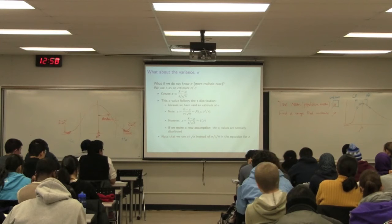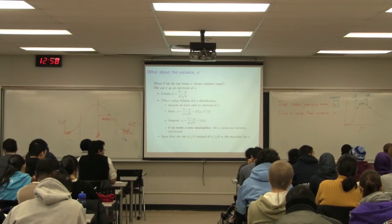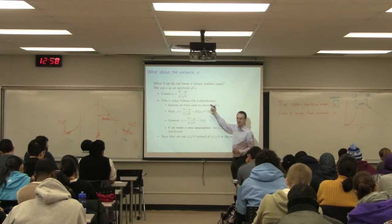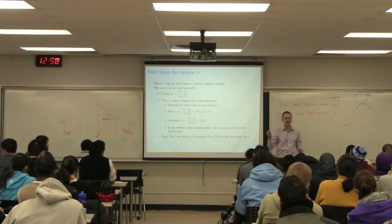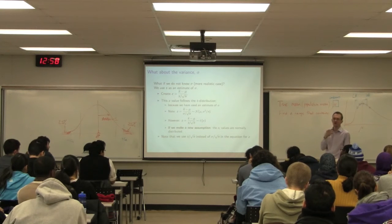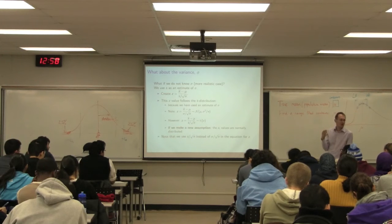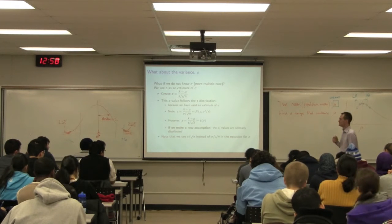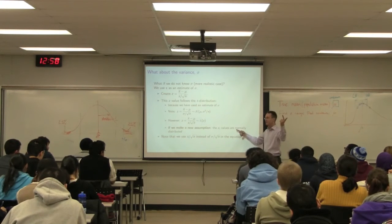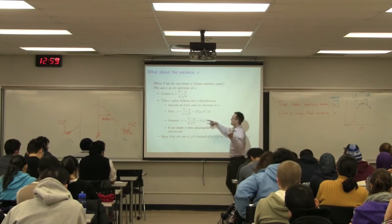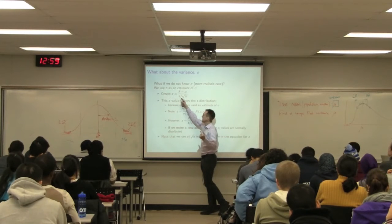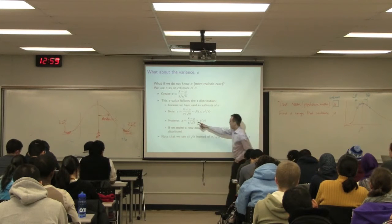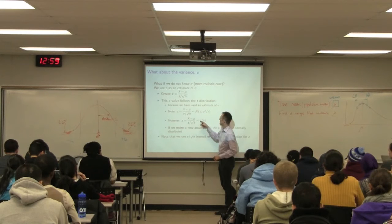First, make sure your data are independent — that requires careful thought; you had a question about this in the weekly test. Second, if x-i are independent and they come from a normal distribution, I can substitute s instead of sigma. Now z is not normally distributed anymore — z comes from the t-distribution. Specifically, x-bar minus mu divided by s over root n comes from the t-distribution.